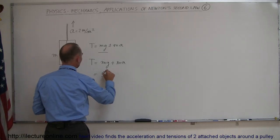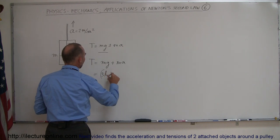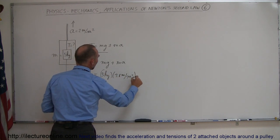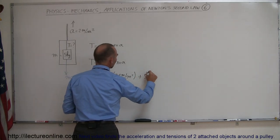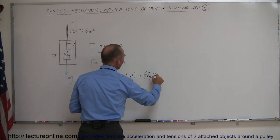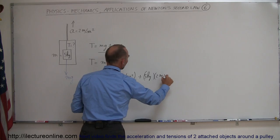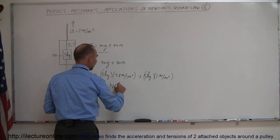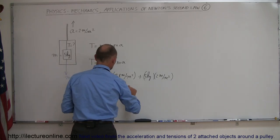we have 5 kilograms times 9.8 meters per second squared plus 5 kilograms times 2 meters per second squared. So that would be 49 newtons plus 10 newtons.